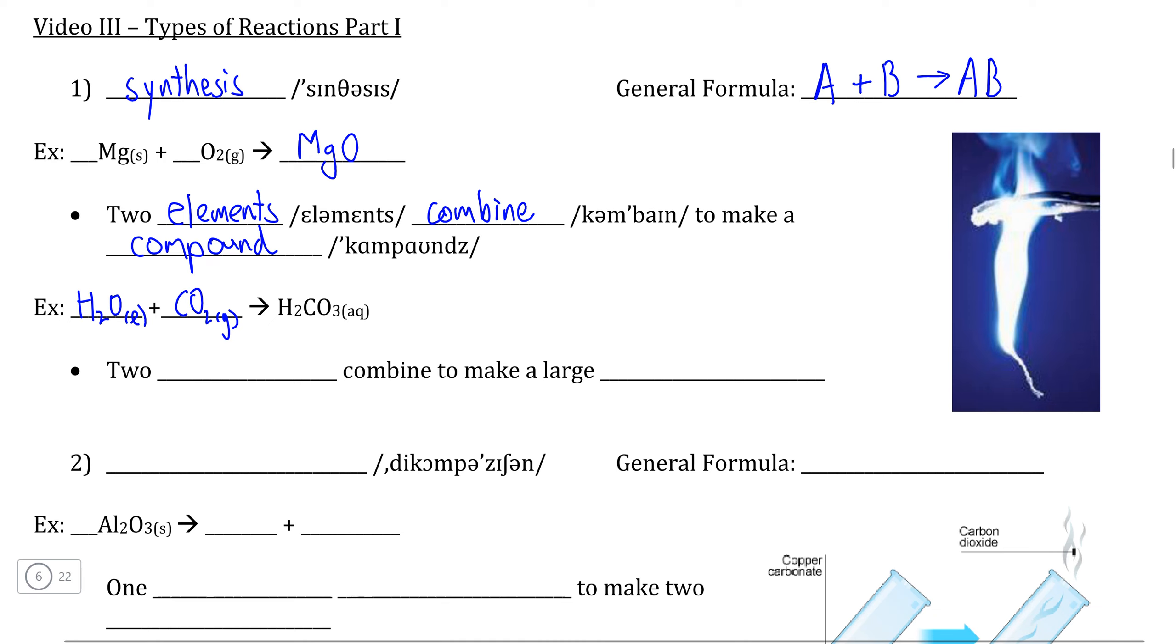Now, this reaction is different in that we start with two small compounds, that being water and carbon dioxide, rather than individual elements, in order to produce a larger compound, that being H2CO3 carbonic acid.